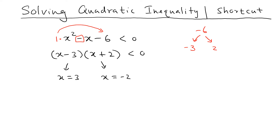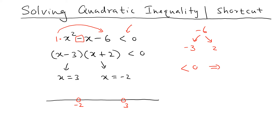Now we mark them on a number line. We put negative 2 on one side, and since this is a strict inequality, we use an open dot. We also put an open dot at 3. The key idea: if it is a less-than inequality, the answer is inside; if it is a greater-than inequality, the answer is outside.